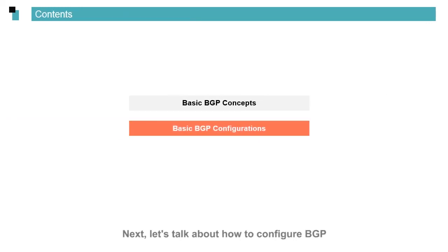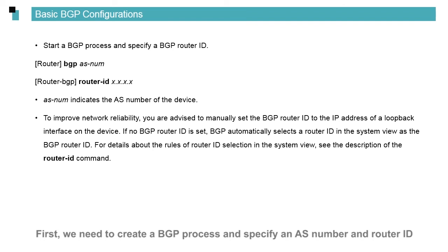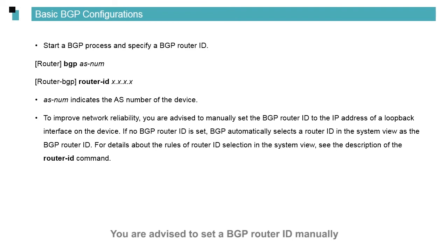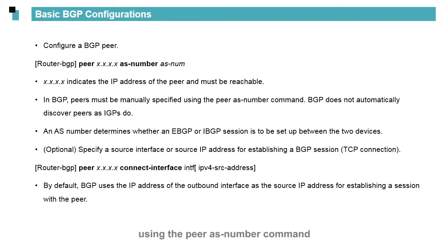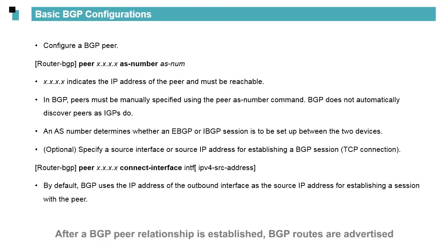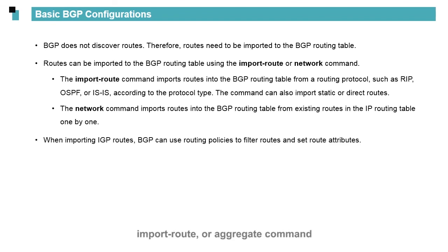Next, let's talk about how to configure BGP. First, we need to create a BGP process and specify an AS number and router ID. If no BGP router ID is set, BGP automatically selects a router ID from the system view. You are advised to set a BGP router ID manually. Next, configure a BGP peer — BGP peers need to be specified manually using the peer AS-number command. You can also specify the source IP address for establishing a BGP session with the peer. After a BGP peer relationship is established, BGP routes are advertised. Routes must be added to BGP before they are advertised. Routes can be imported to the BGP routing table using the network, import-route, or aggregate command.